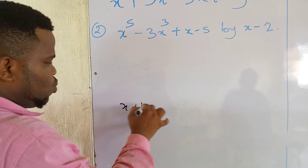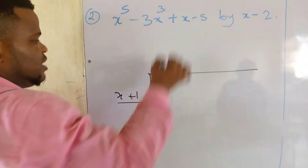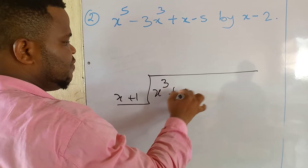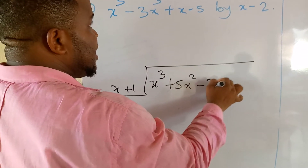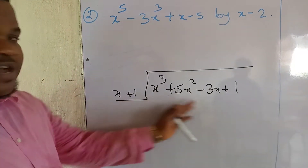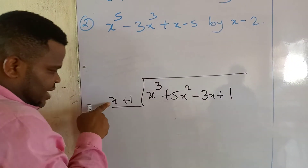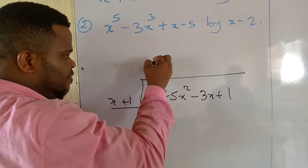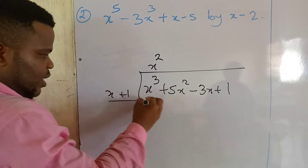So we set up x plus 1 on the outside, and we write x cubed plus 5x squared minus 3x plus 1 inside. To divide this polynomial, we ask: how many times does x go into x cubed? The answer is x squared.